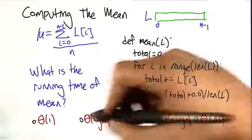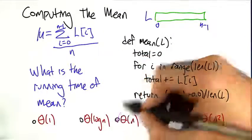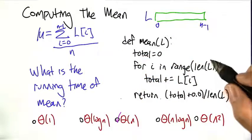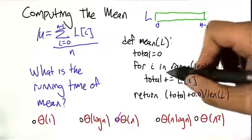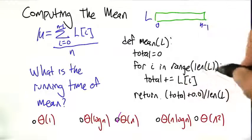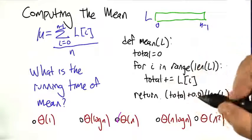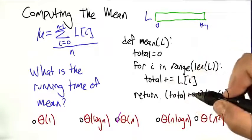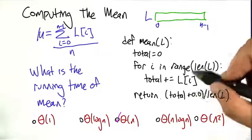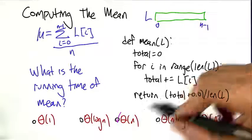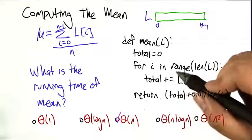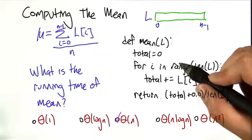And I'm hoping, if you've been paying attention, that that was pretty easy to see that that's linear. It's just running through each of the elements in the list and doing constant work for each of those elements. So the total running time is going to be Big Theta of n.